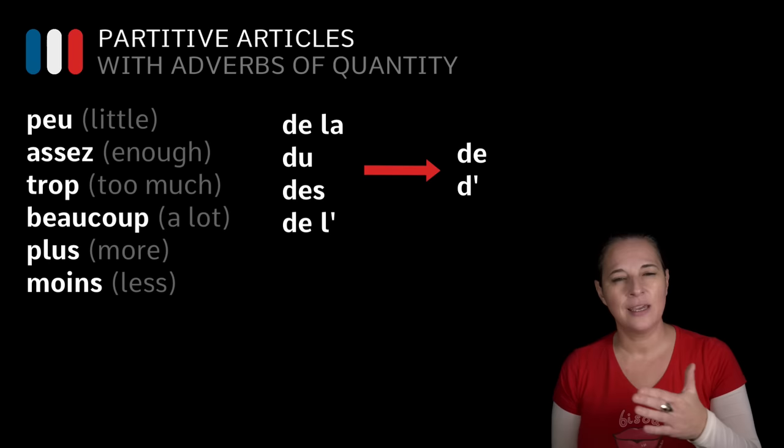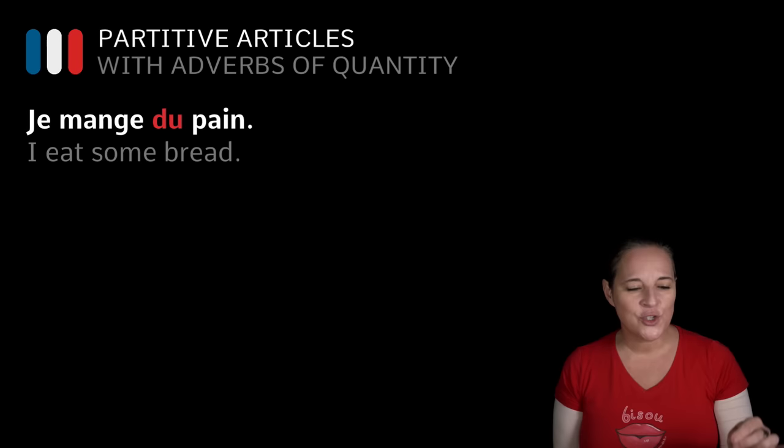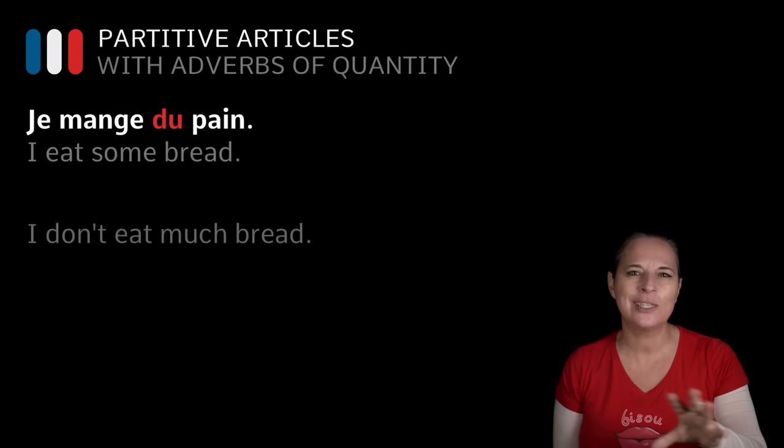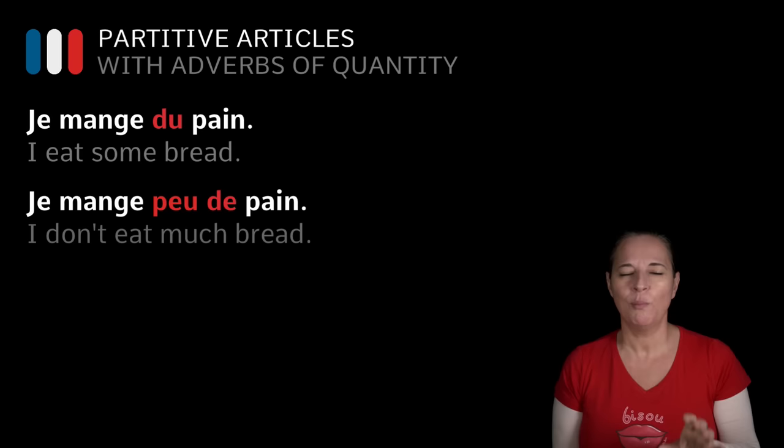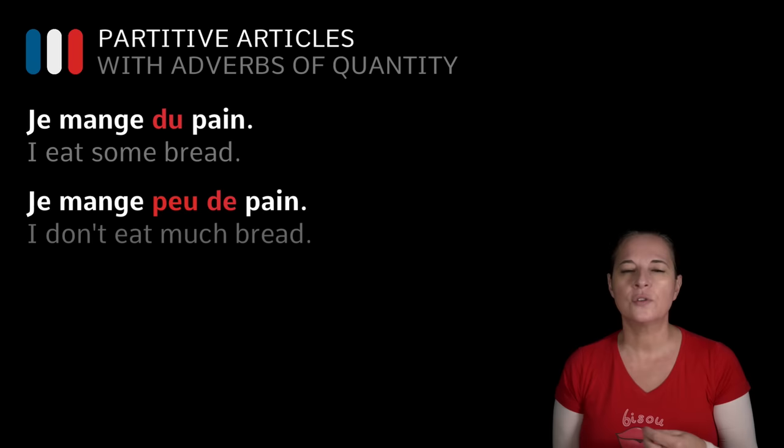For example, 'Je mange du pain' — I eat some bread. But we want to say I eat little bread — PEU meaning little. 'Je mange PEU DE pain.' You wouldn't say 'Je mange PEU DU pain.' Because you are using this adverb of quantity, you've got to use DE after it. So: 'Je mange PEU DE pain.'